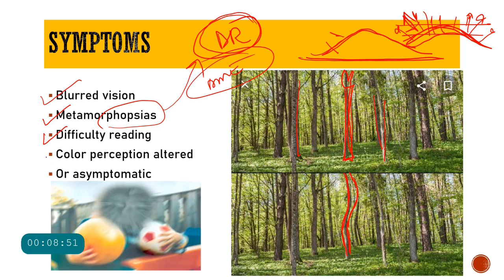Patients with DME may also have difficulty reading and altered color perception, because the fovea and macula contain a high density of cones — cone density is maximum in the macula — and as macular edema develops, color perception may also be affected.